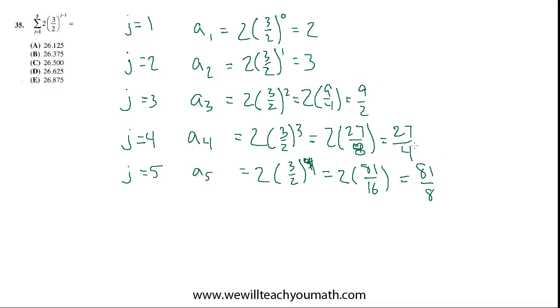And then without even working out the decimal equivalents or mixed numbers for these, let's just pump these directly into the calculator, add them up and get the answer. I get 26.375, and that's choice B. That's the best answer.